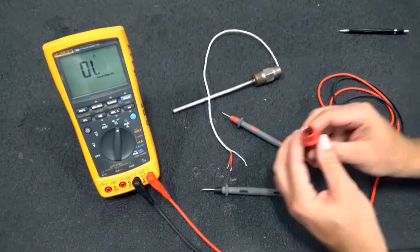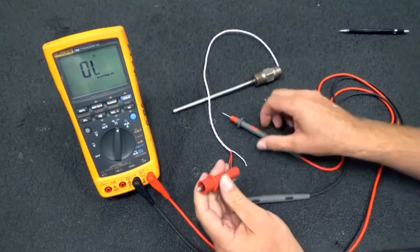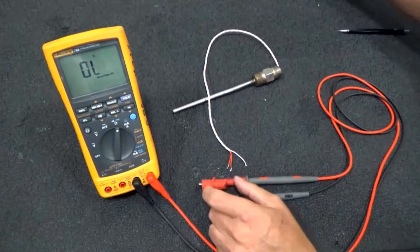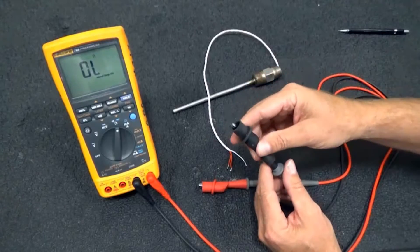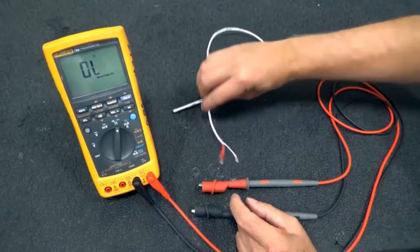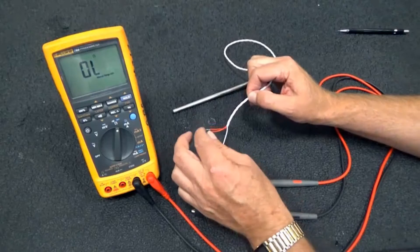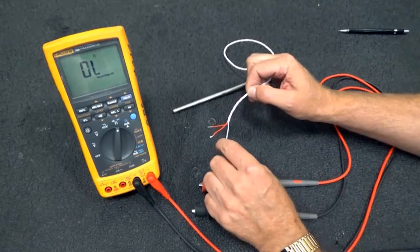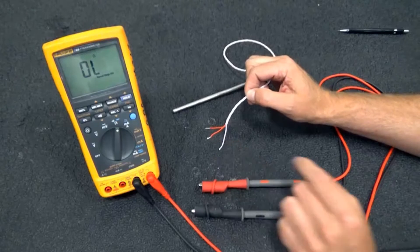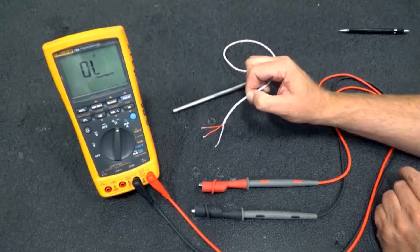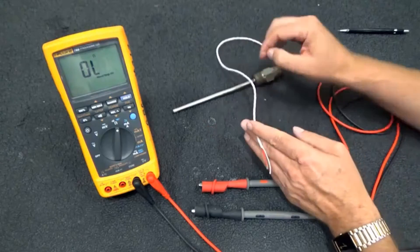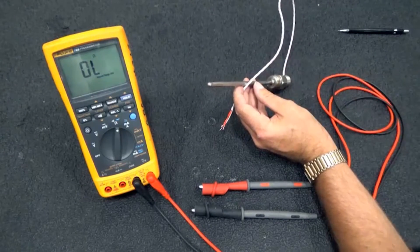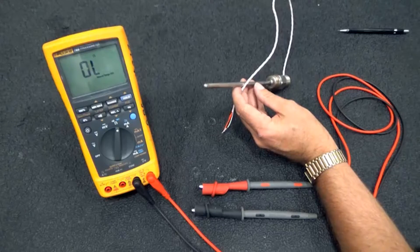I think what I'll do is I'm going to put on my alligator clips here so we can connect to the RTD without having to hold it with fingers. Like what we said before was that the red wires are connected together, and the white wire is on the other side of the resistor. The resistor is formed by a small piece of platinum wire that's down in the tip of this, and the resistance of that wire changes as temperature changes.